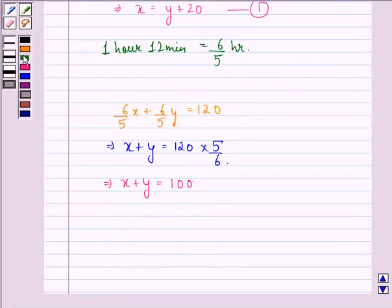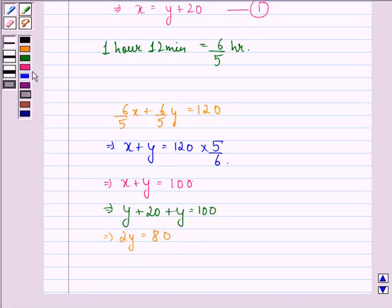We already know that x is equal to y plus 20. So, this implies y plus 20 plus y is equal to 100. This implies 2y is equal to 80 and this implies that y is equal to 40 km per hour.